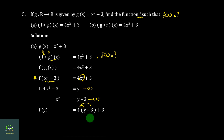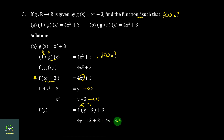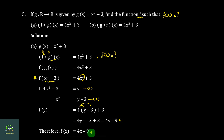This gives us 4y minus 2 plus 3. This is the formula. Then 4y minus 9. The formula for x minus 9 is 1. So 4y minus 9.